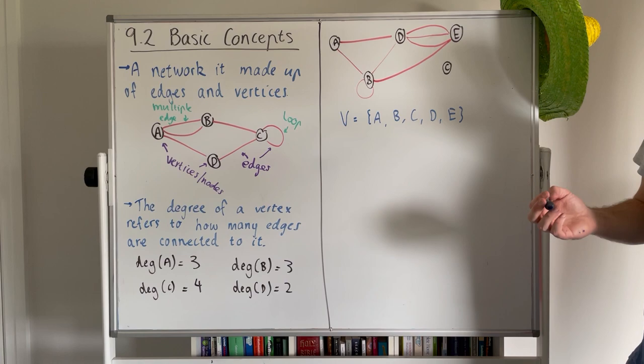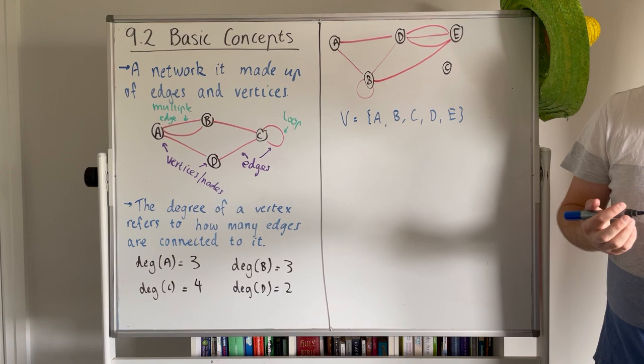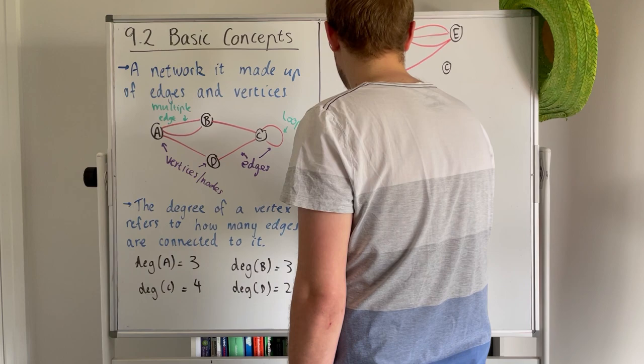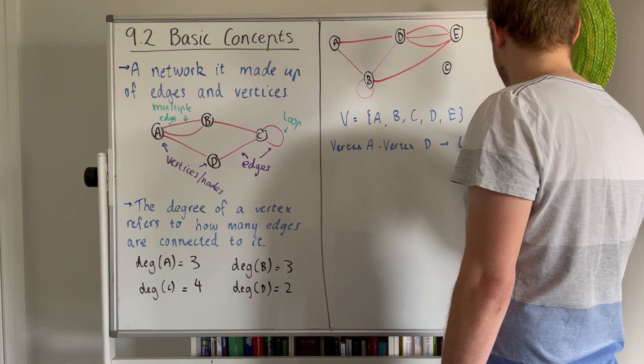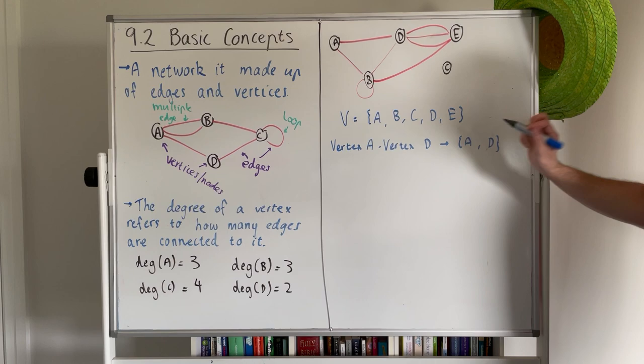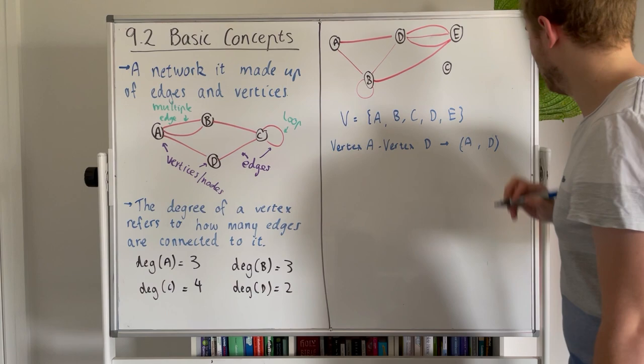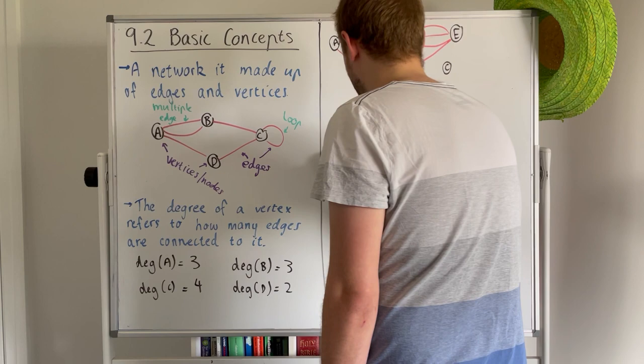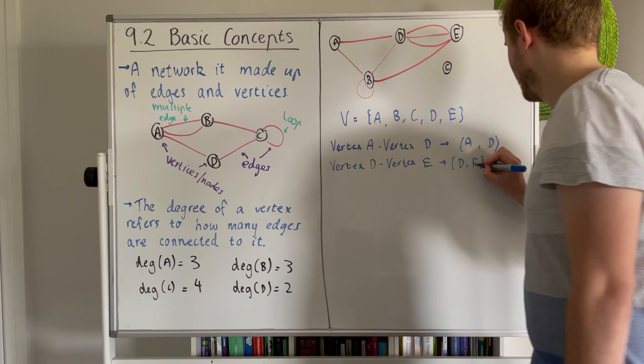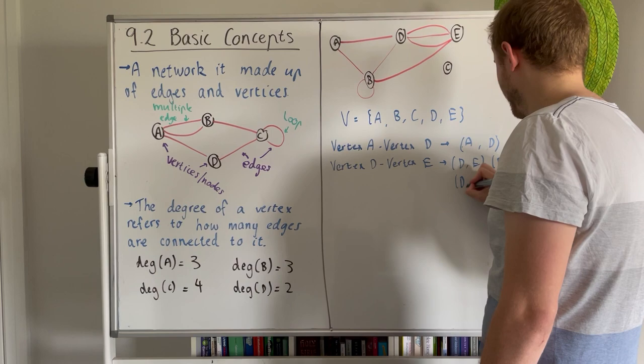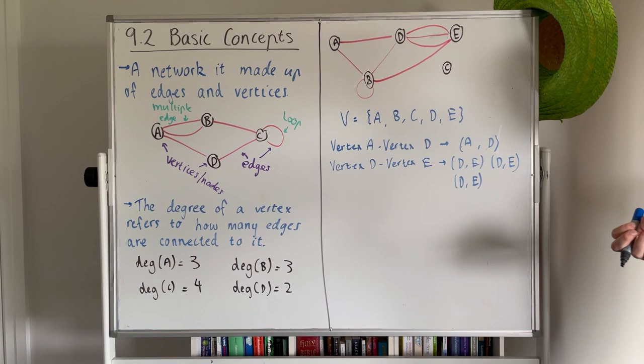Now if I wanted to demonstrate a connection between A and D, which in this case we have one, all I would do is write vertex A and vertex D. That just represents that there is a connection between vertex A and vertex D. I won't do every single connection here because there's quite a lot, but another example: vertex D to vertex E, we have multiple edge. So in this case I could write that one out three times because there are three connections.